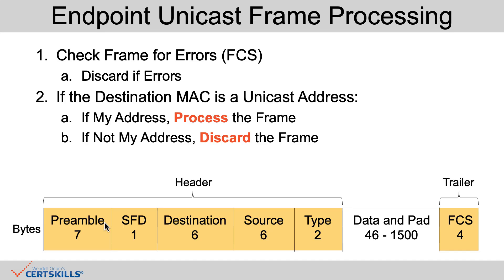Think about the endpoints connected to the LAN switch, like a PC or a laptop. It receives an Ethernet frame — the frame header, trailer, and data look like the format at the bottom of the slide. First, it uses the frame check sequence at the end of the frame to determine if there were any bit errors during transmission. If so, the Ethernet logic throws the frame away. It's up to other layers to do any error recovery if desired.